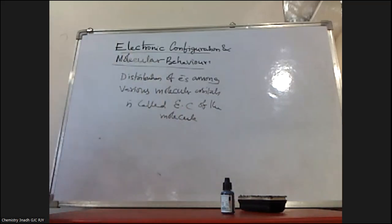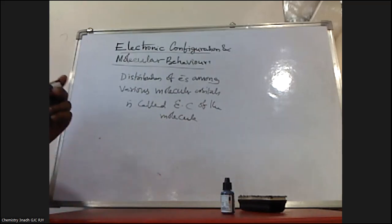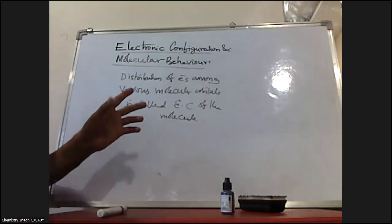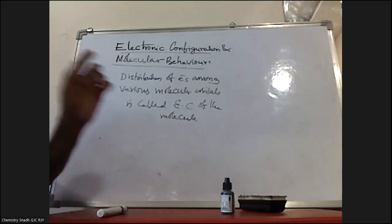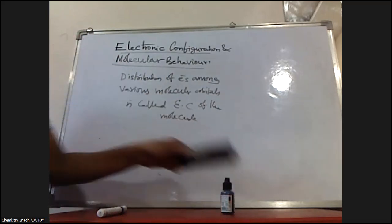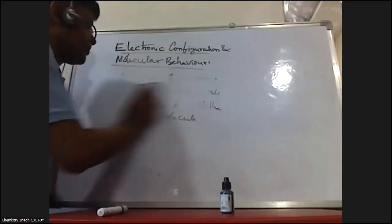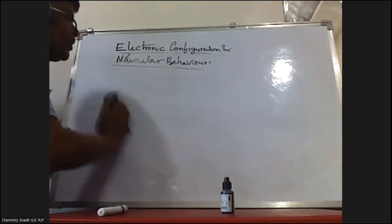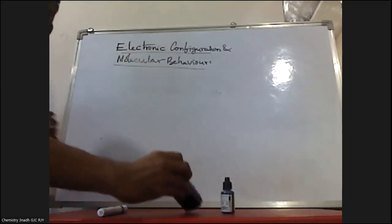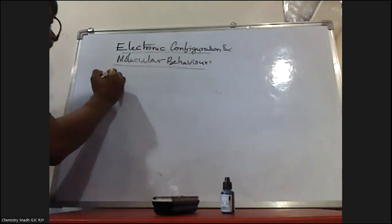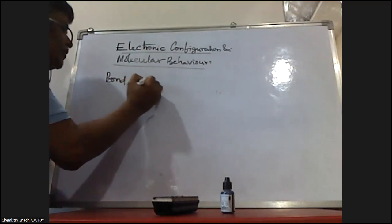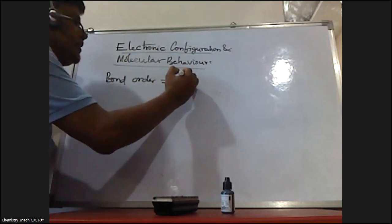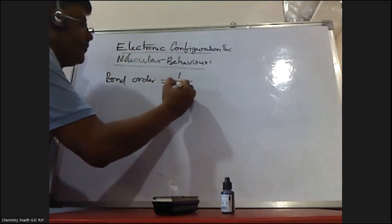From the electronic configuration, I have a kind of information regarding molecule behavior. The first one is bond order. Bond order is the half of the number of electrons in bonding molecular orbitals minus the number of electrons in anti-bonding molecular orbitals.